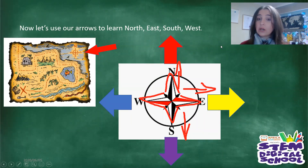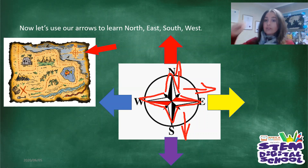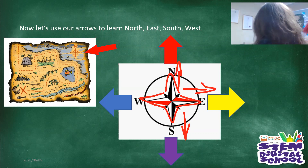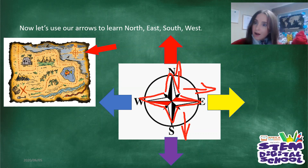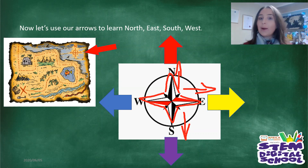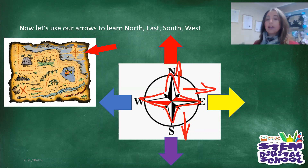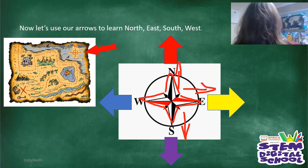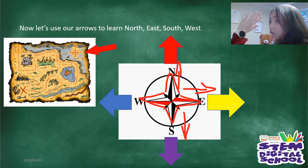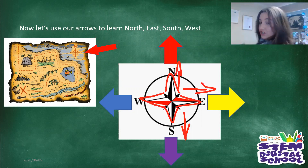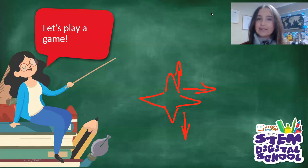And there are our arrows. It's north, east, south and west. So north is up, east is right, south is down, and west is left on our picture. Let me clear this so that we can go to our next game.